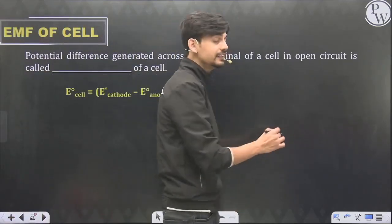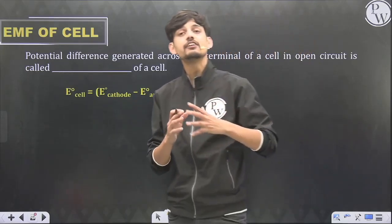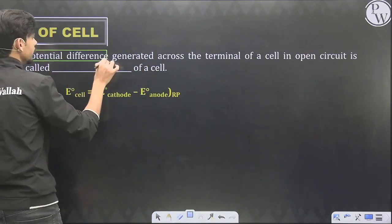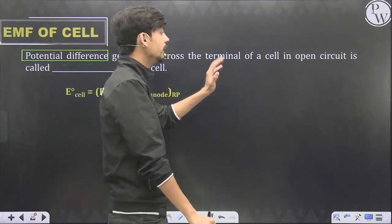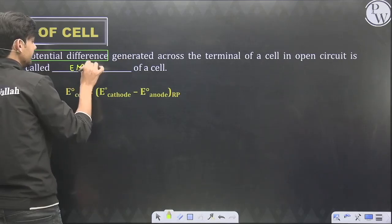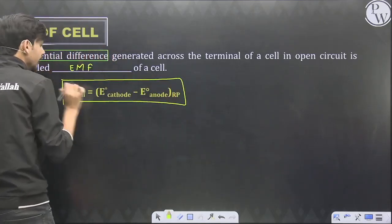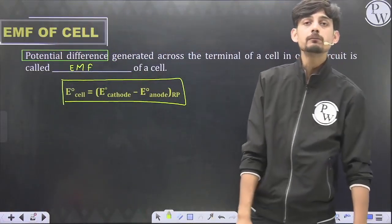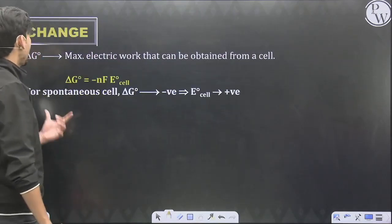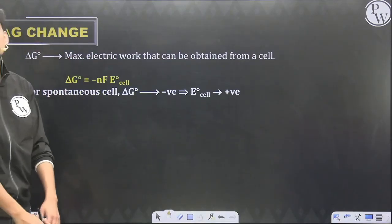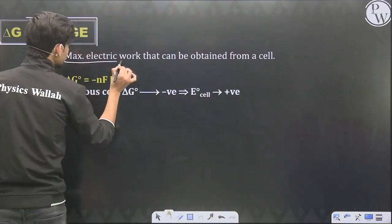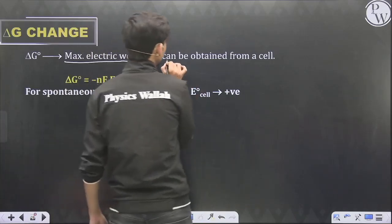We define a term called electromotive force (EMF) of the cell — the voltage we actually get from the cell. EMF is defined as the potential difference generated across the terminals (anode and cathode) of a cell in open circuit. E°cell is defined as E°cathode minus E°anode in terms of reduction potential. Delta G (the energy change) is calculated as delta G° = –nFE°cell, where n is the number of electrons transferred and F is the Faraday constant.